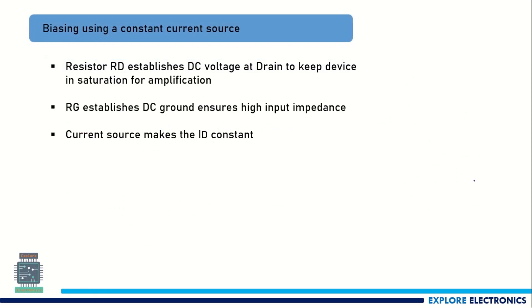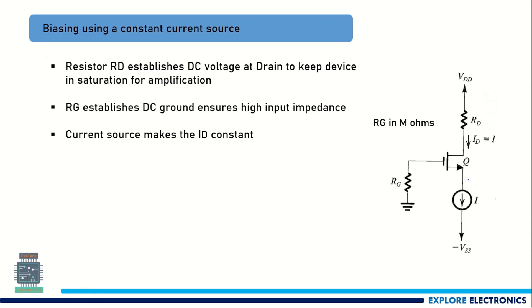The next method is biasing using a constant current source. In this circuit, a current source is placed at the source terminal of the MOSFET. This current source maintains ID equal to the constant current source value I. Even if there is any variation in ID, it will be compensated by the current source. Since it is a constant current source generating a constant value, ID will not vary — it will remain constant.